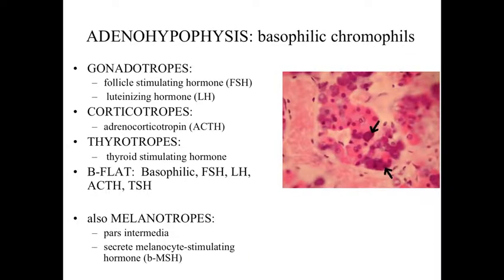The second category of chromophils within the anterior pituitary are going to be the basophilic chromophils. They're going to take up the basophilic stain — purplish or dark blue with hematoxylin-eosin — and you can see these clustered around the eosinophilic chromophils. Categories include gonadotropes, which secrete either follicle-stimulating hormone or luteinizing hormone (not both); corticotropes, which secrete ACTH; and thyrotropes, that secrete thyroid-stimulating hormone. You can remember the basophilic chromophils with the mnemonic B-flat: basophilic, FSH, LH, ACTH, and TSH. There's also a population of melanotropes only found in the pars intermedia, at the junction between the anterior and posterior pituitary, secreting beta-melanocyte-stimulating hormone.